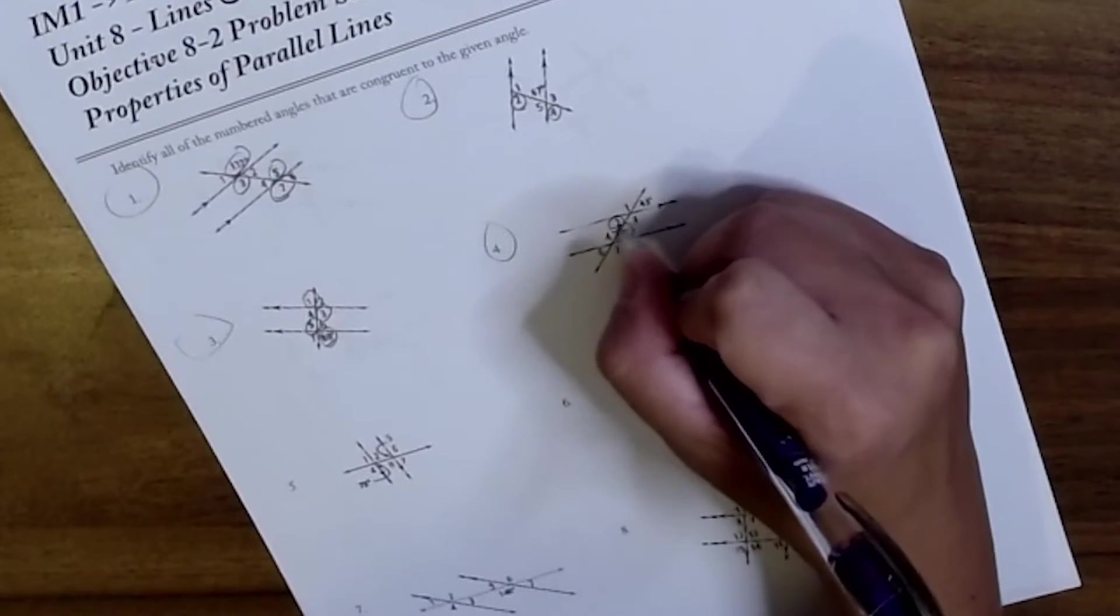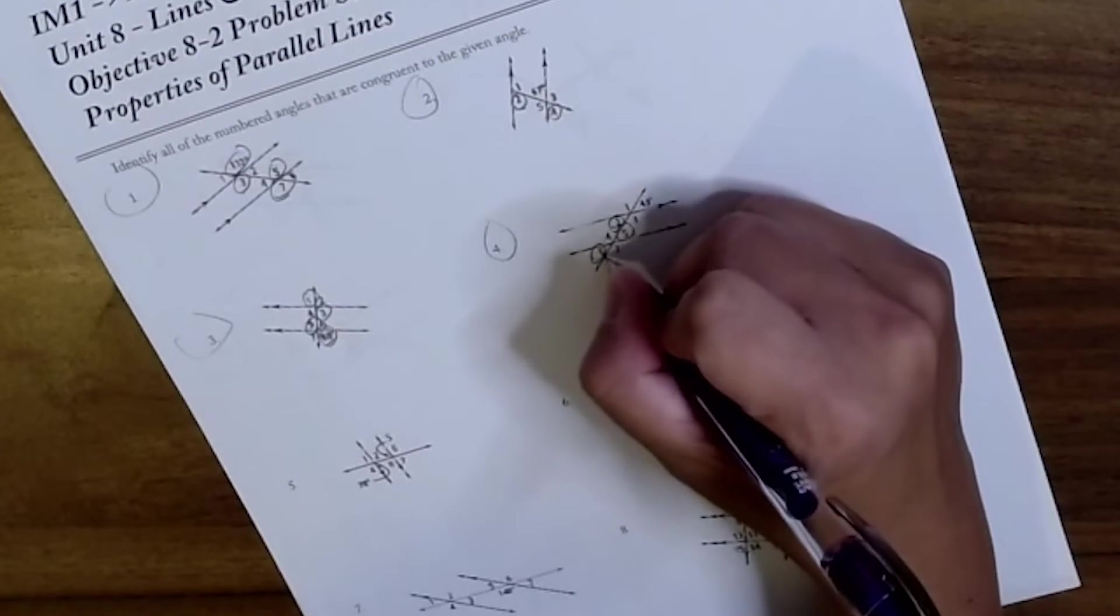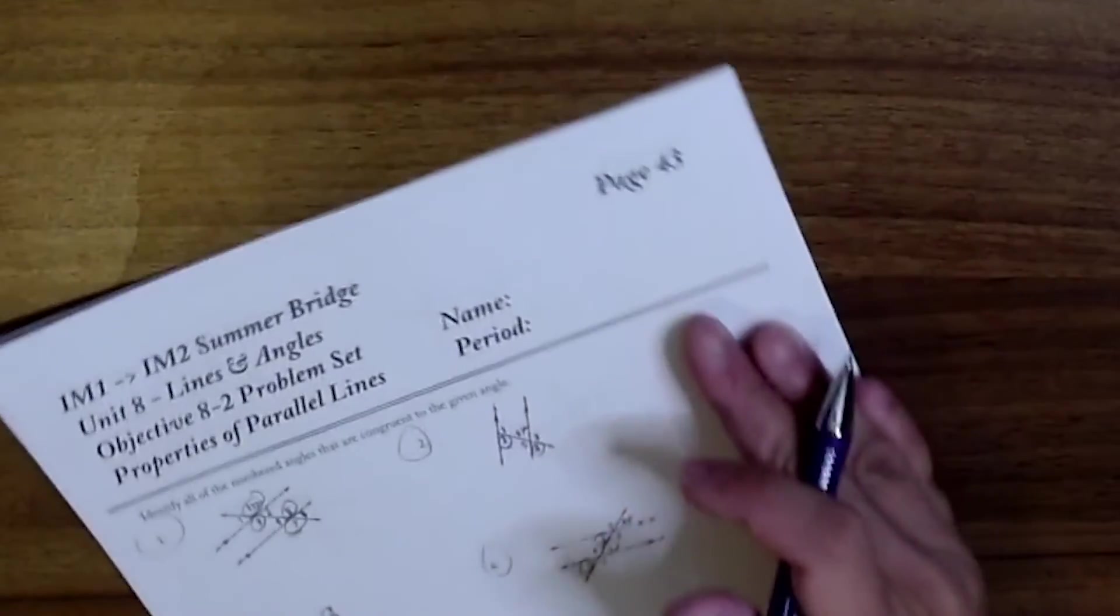43, 2, alternate interior is 5, and another vertical is 6.